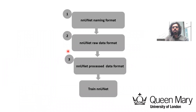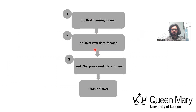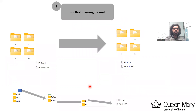In this video we'll talk about how to start the training of NNUnit. To start the training we need to pass the dataset through three steps, named: NNUnit Naming Format, Raw Data Format, and Process Data Format. We'll see how to prepare the dataset before we start the NNUnit training. Let's start with NNUnit Format.